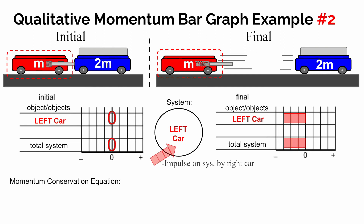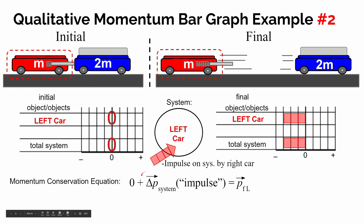We put the momentum bars to the left of zero because the car is moving to the left with negative momentum. Since the system started at zero and ends with negative momentum, there must have been a negative impulse — a negative change of momentum on the system. We call it a negative impulse on the system by the right car, because Newton's third law says if the blue car feels a force to the right, it pushes back with an equal force to the left. So the blue car applies a negative impulse to the car on the left.